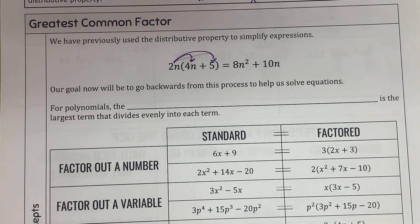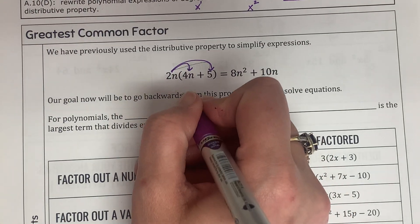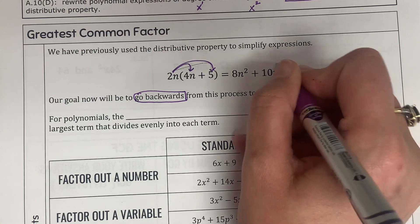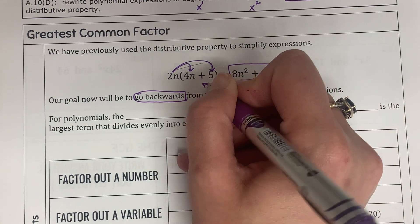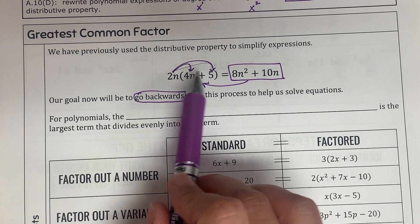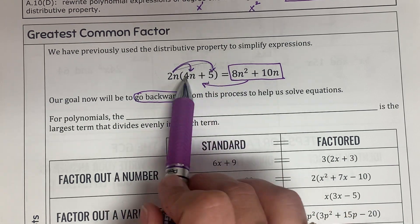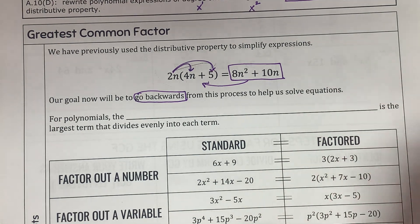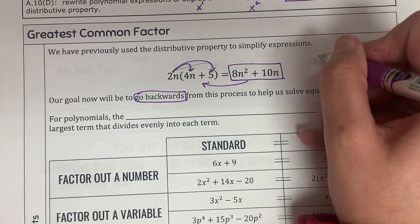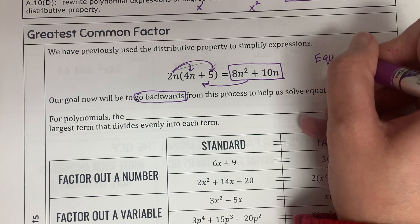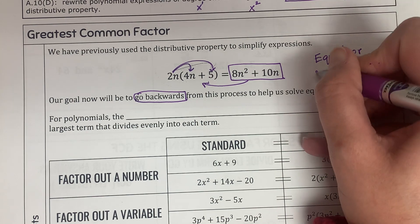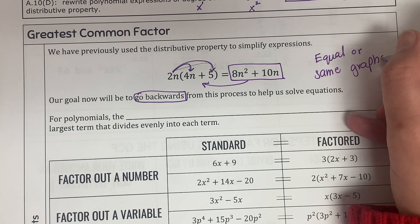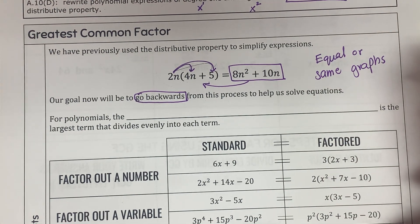Our goal today is actually to go backwards. I have an expanded expression and I'm going to go backward in order to factor it out and make it look like the factored form. They both are equal — that's why it's called equivalent. If I graph them on the calculator, they produce the same graph. That's how I can check whether I solved it correctly or not.